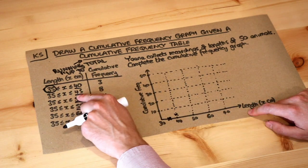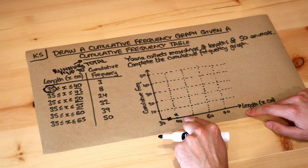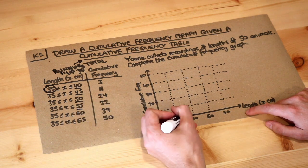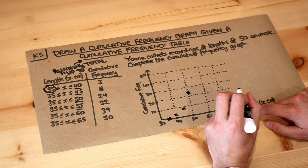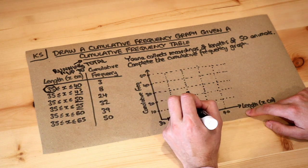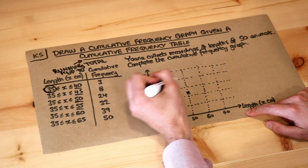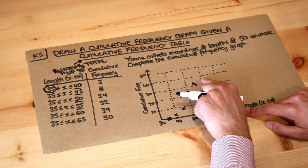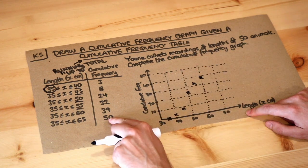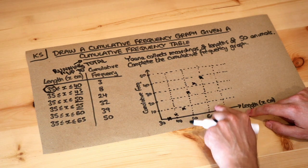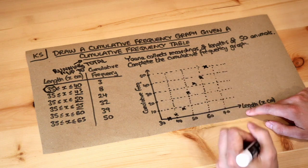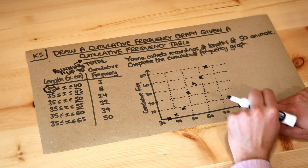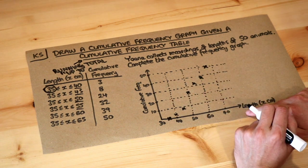Now let's plot the rest: eight animals with a length of up to 45, so we plot 45 against 8, roughly there. Then 24 animals up to 50, then 32 animals up to 55, then 39 animals up to 60, and finally 50 animals up to 65. Then all we do is join these up either using straight lines between each pair of dots or with a smooth curve.